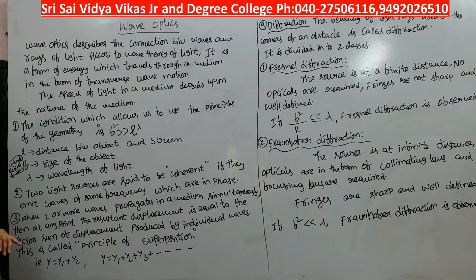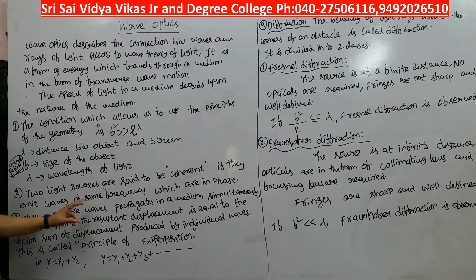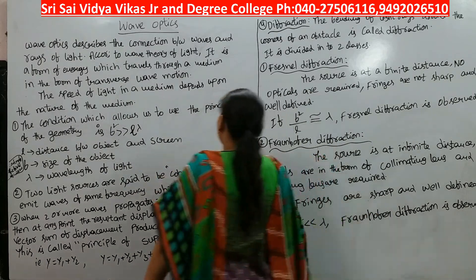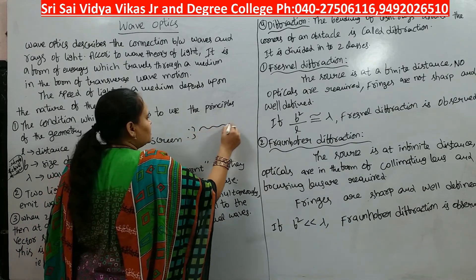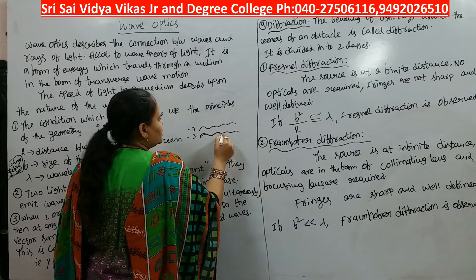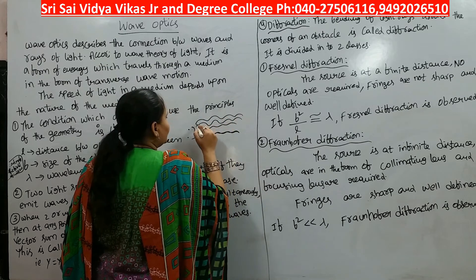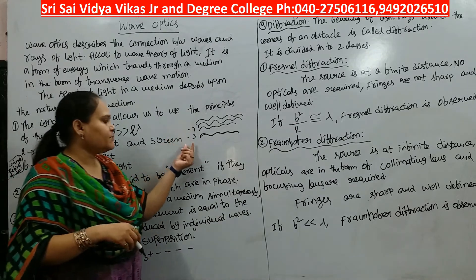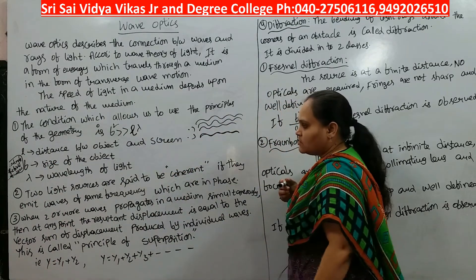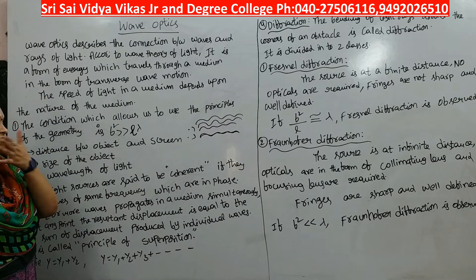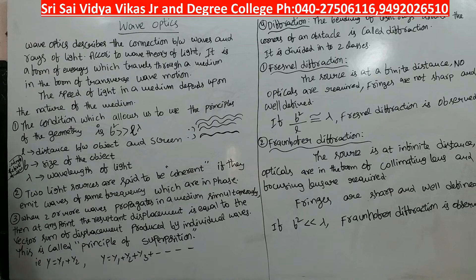The second point is: what are coherent sources? Two light sources are said to be coherent if they emit waves of the same frequency which are in phase or have a certain constant phase difference. That type of sources are nothing but coherent sources.